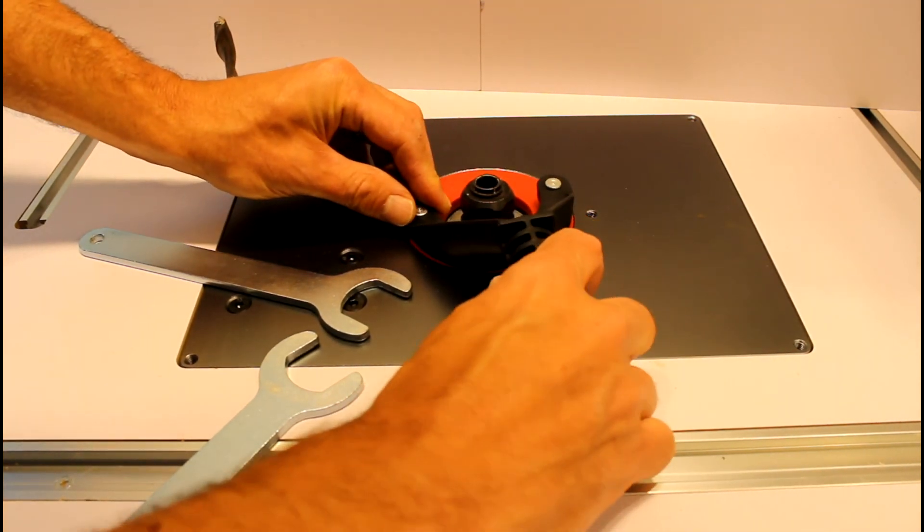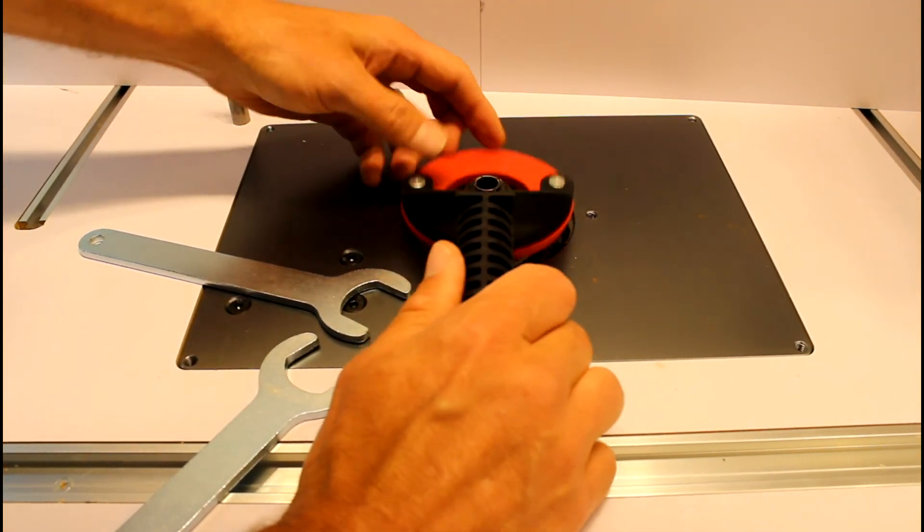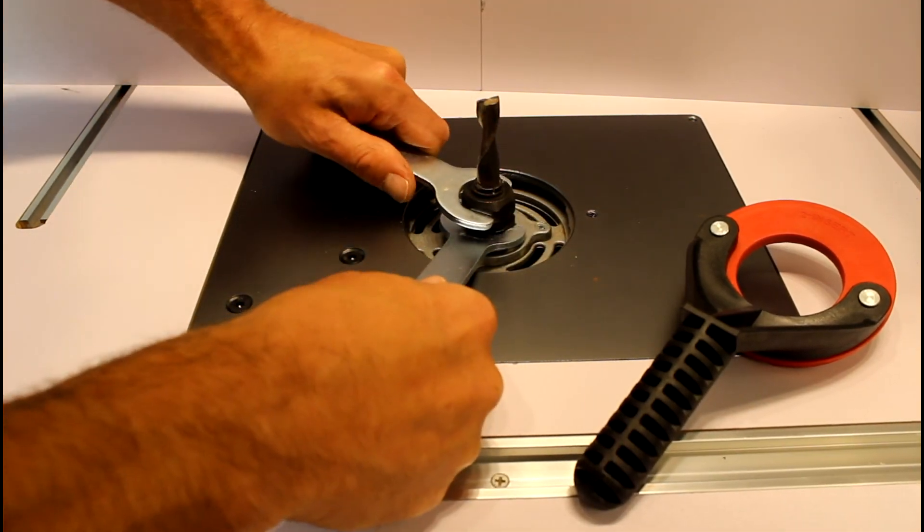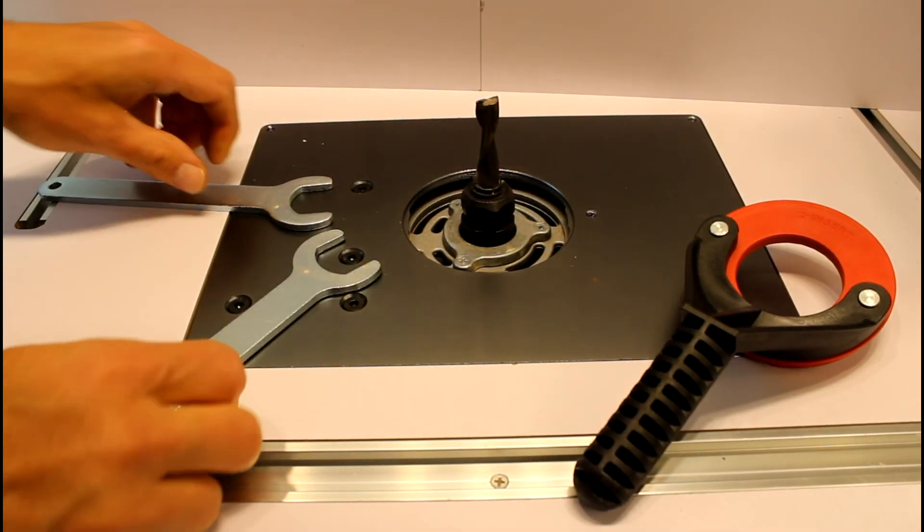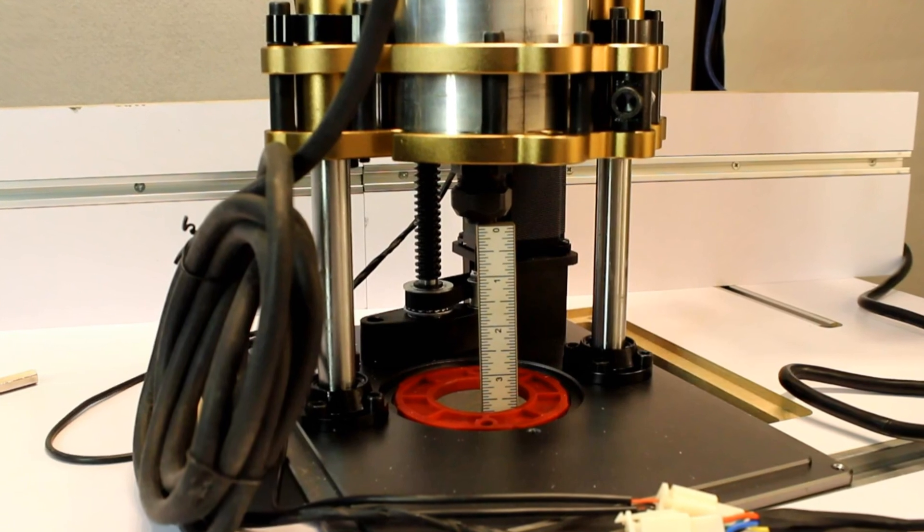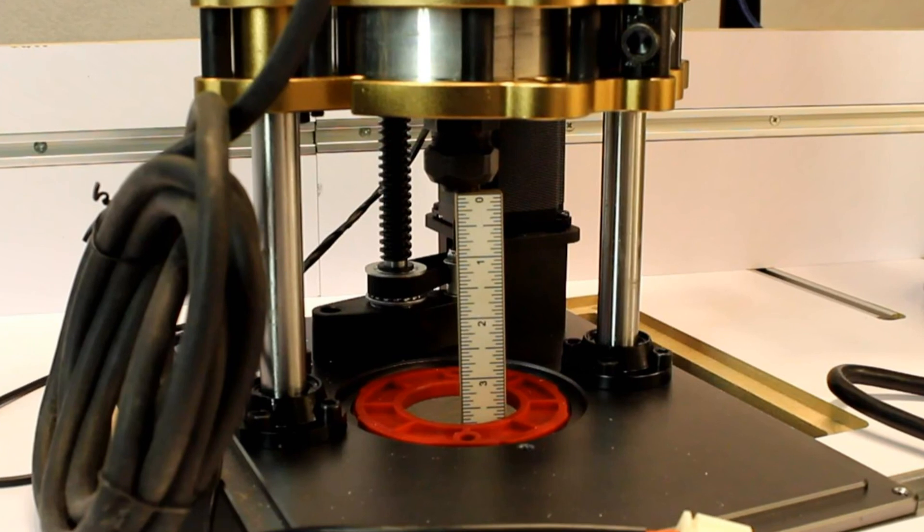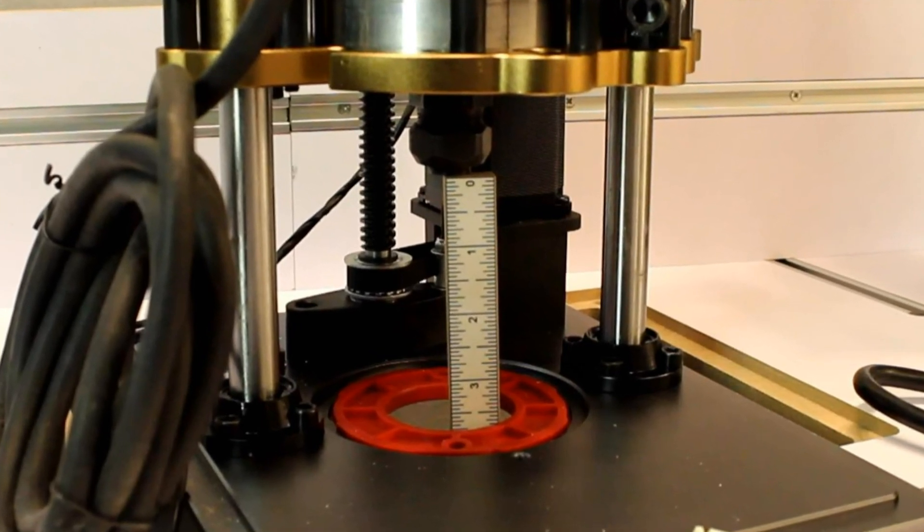The PowerLift Pro has quick change insert rings allowing you easy access to change bits. When the lift is lowered all the way down there's 4 inch capacity between the top of the collet and the top of the router plate to handle even your tallest bits.